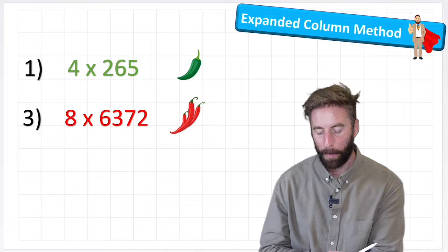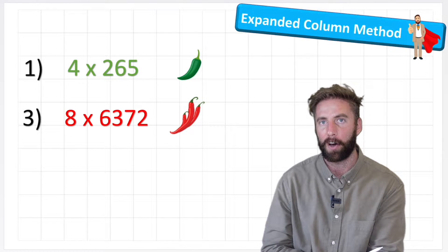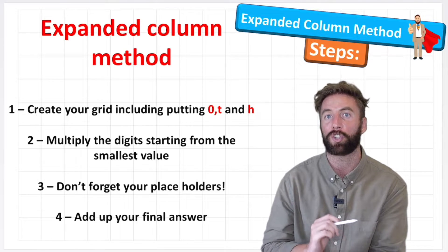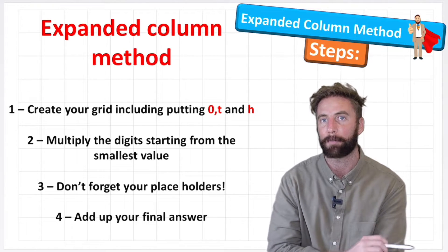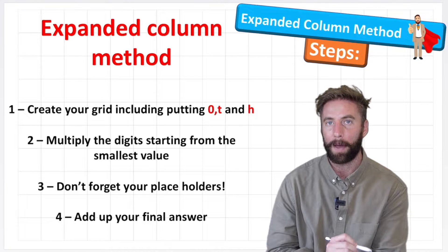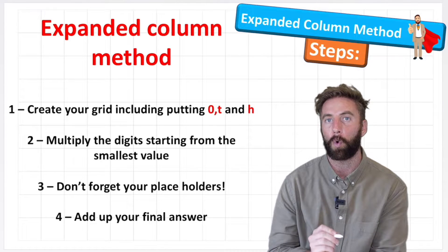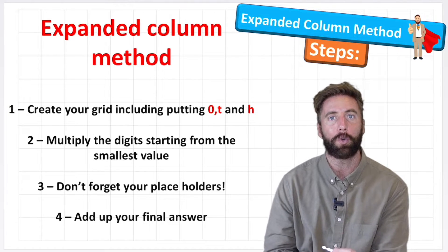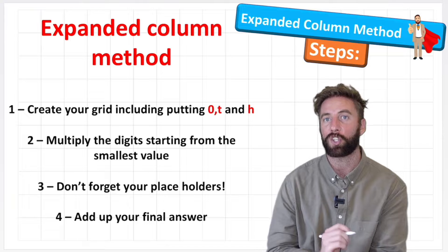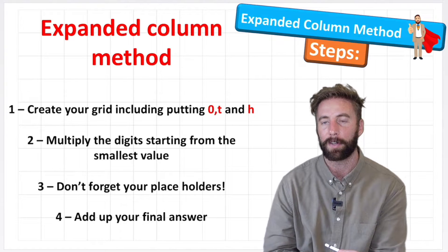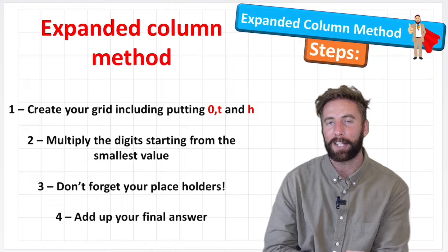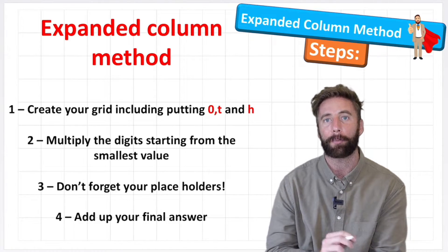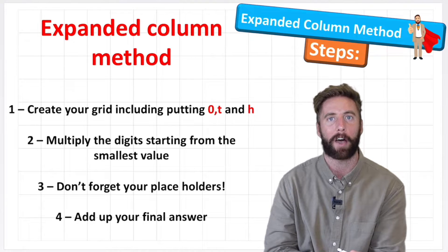We're looking at two questions: a green chilli challenge and a harder red chilli challenge. Before we do that, let's look at the steps we'll need to follow. Step one: create our column method grid, remembering to put ones, tens and hundreds at the top. Step two: multiply our digits starting with the smallest values. Step three: don't forget our placeholders. Step four: add up our individual elements to get our final answer.